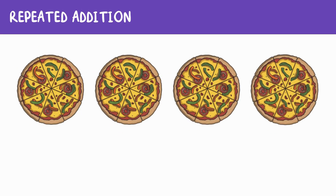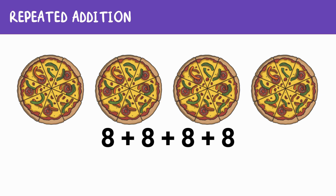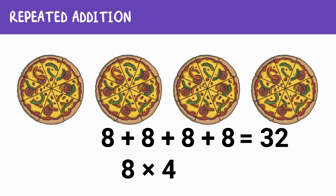Let's look at one more example using repeated addition. Let's say you want to solve for how many total pieces of pizza are in four pizzas, and each pizza has eight slices. You could add eight four times: eight plus eight plus eight plus eight. Or simply multiply eight times four. Let's solve by adding: eight plus eight is 16, plus eight is 24, plus eight is 32. Or if you know your facts, eight times four equals 32. This shows how repeated addition helps us understand multiplication better, making it easier to find the total without doing so much adding.